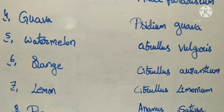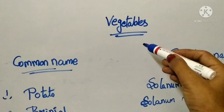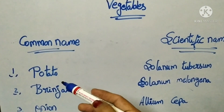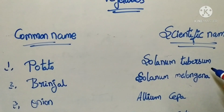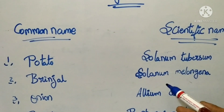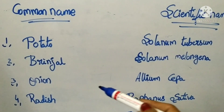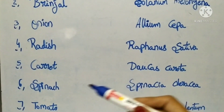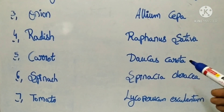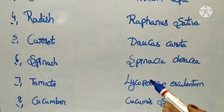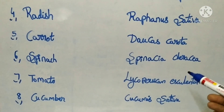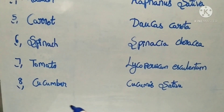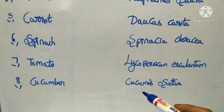Next, we will start with vegetables. Vegetables with their scientific names: Potato — Solanum tuberosum. Brinjal — Solanum melongena. Onion — Allium cepa. Radish — Raphanus sativus. Carrot — Daucus carota. Spinach — Spinacia oleracea. Tomato — Lycopersicon esculentum. Cucumber — Cucumis sativus.